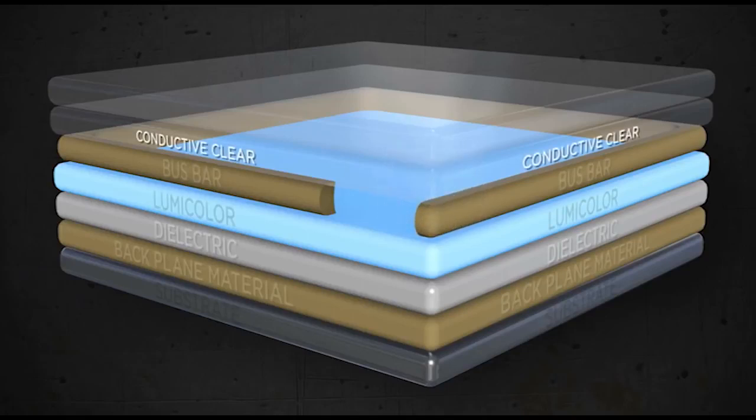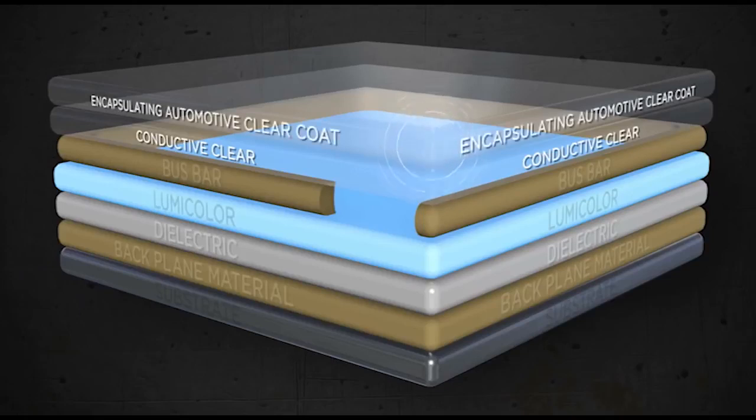The conductive clear layer is the final conductive element that once charged allows LumaColor to emit light. Top it all off with a coat of your favorite encapsulating automotive clear coat and you're in business.